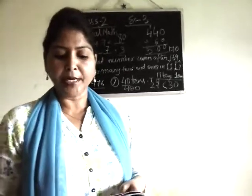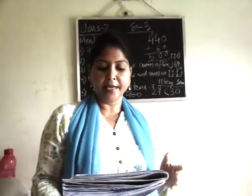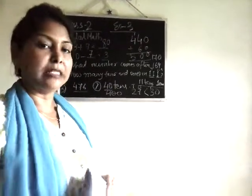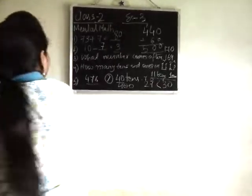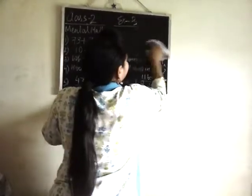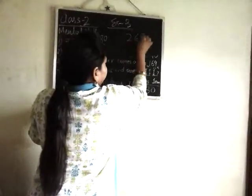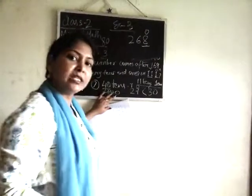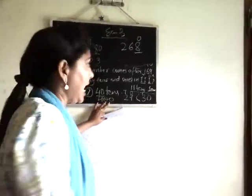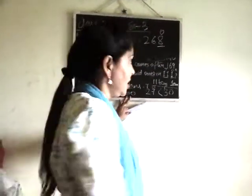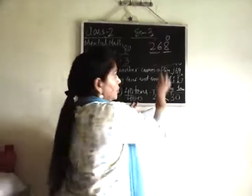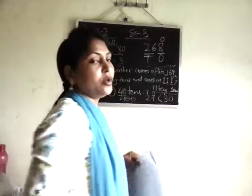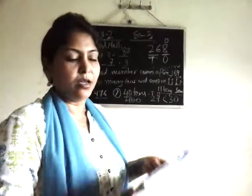Question number 7: how many tens are there in 268? The last place value, which is ones, remains in the ones place. All the other digits go into the tens place. So in 268, the digits 26 are in the tens place and 8 is in the ones place — meaning there are 26 tens and 8 ones.